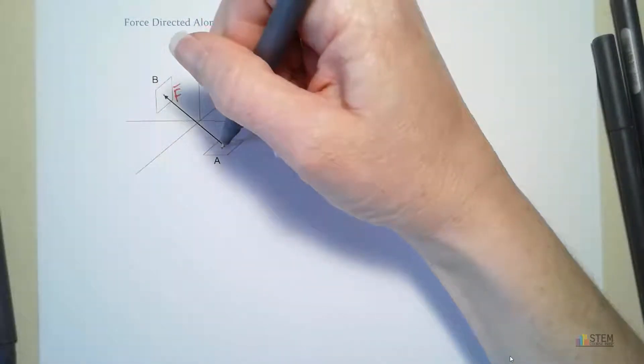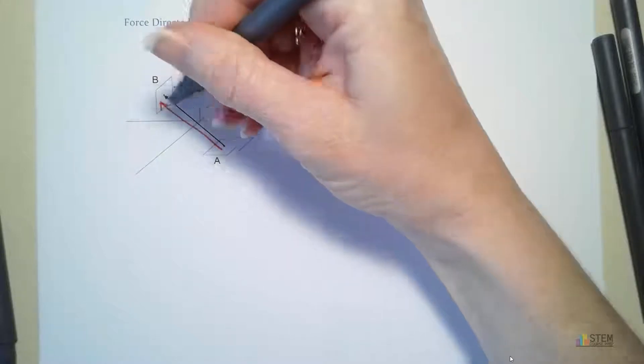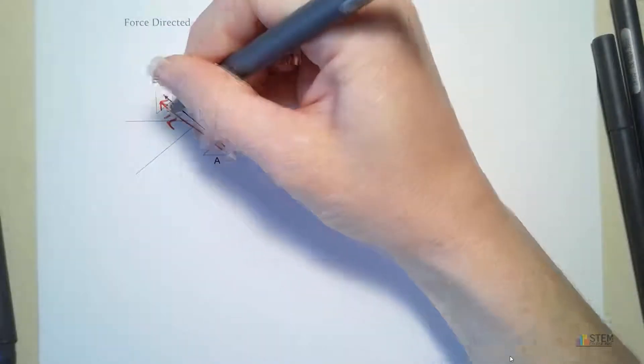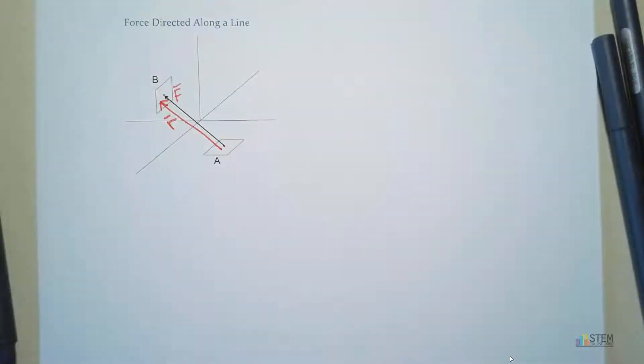Now, we could, if we wanted, we could find a position vector between A and B, couldn't we? Assuming we had the coordinates of A and B.